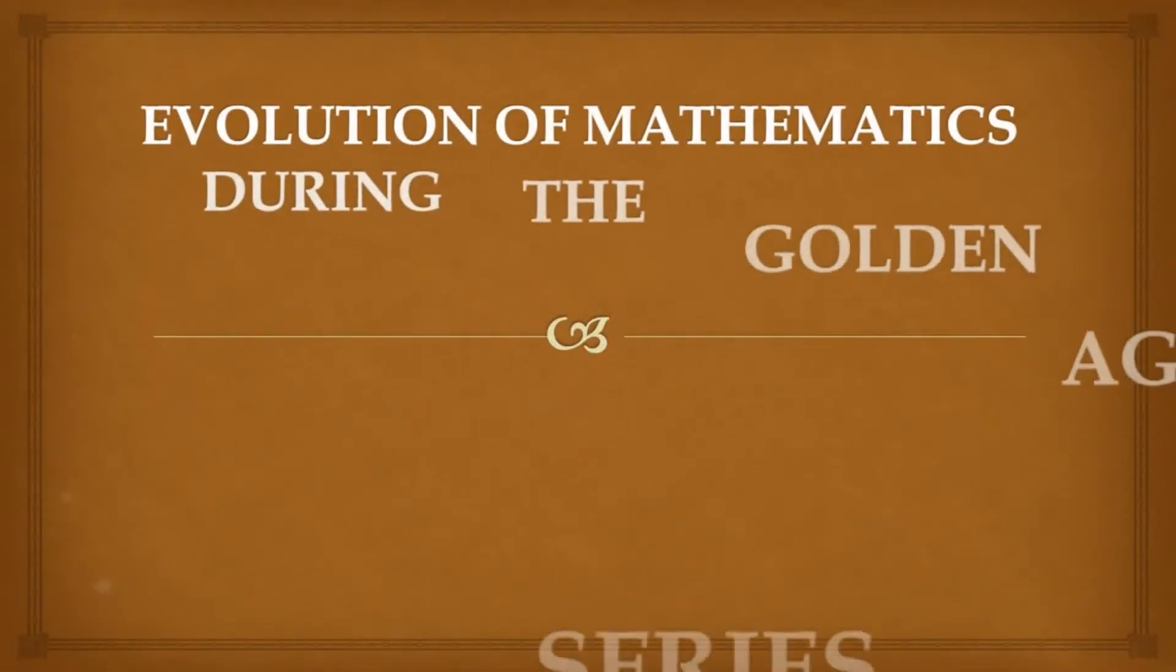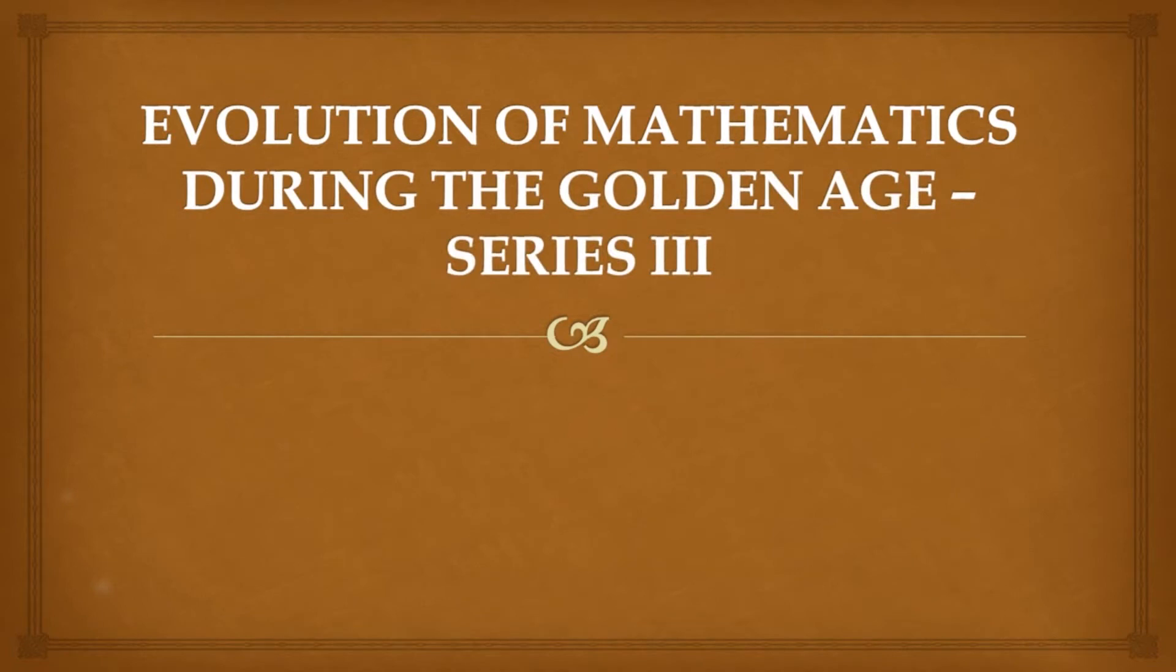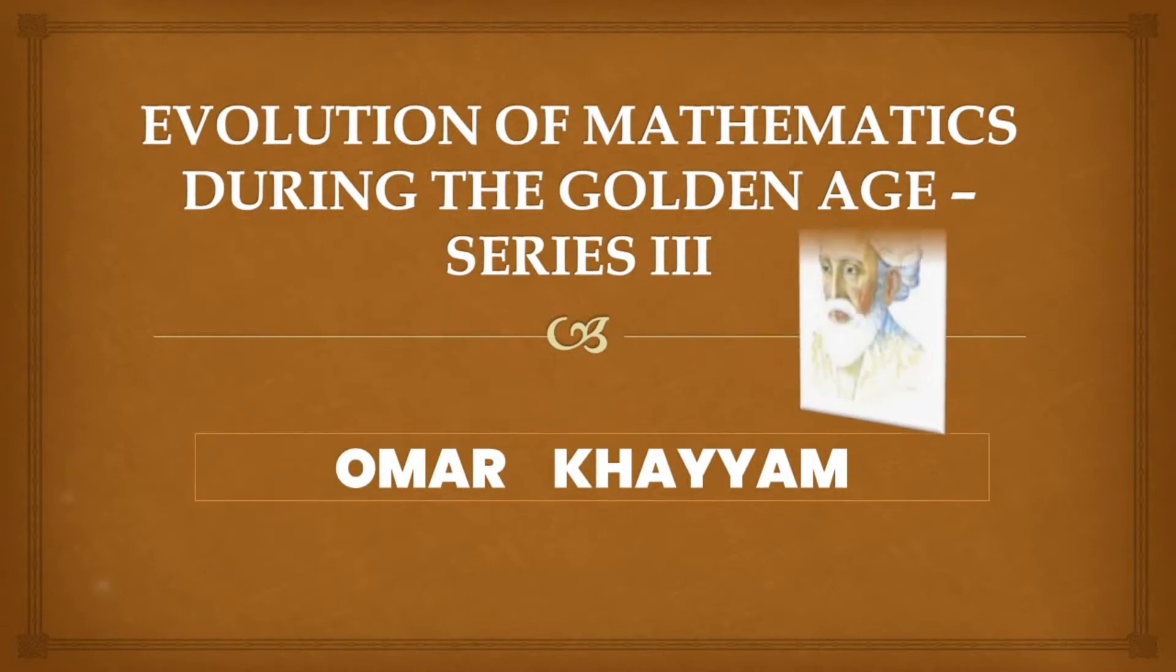We are back with the Scholars series on the evolution of mathematics during the Golden Age. In today's episode, we are going to be talking about a mathematician called Omar Khayyam.